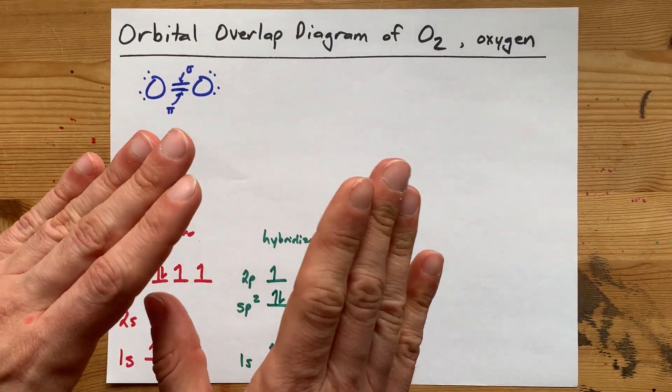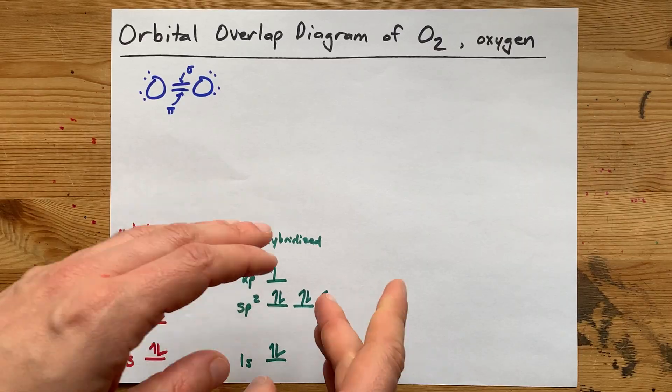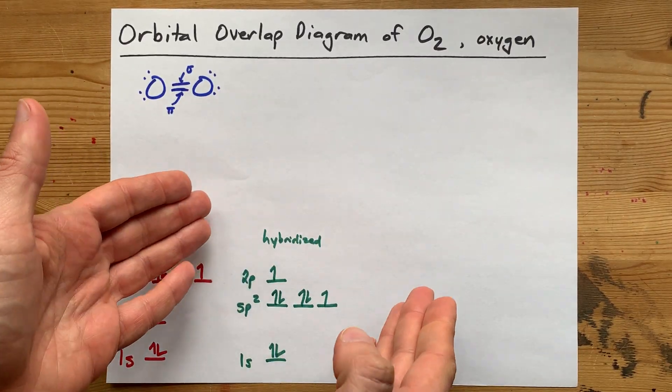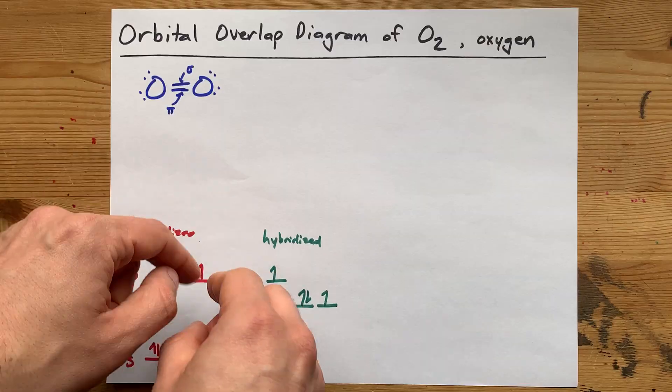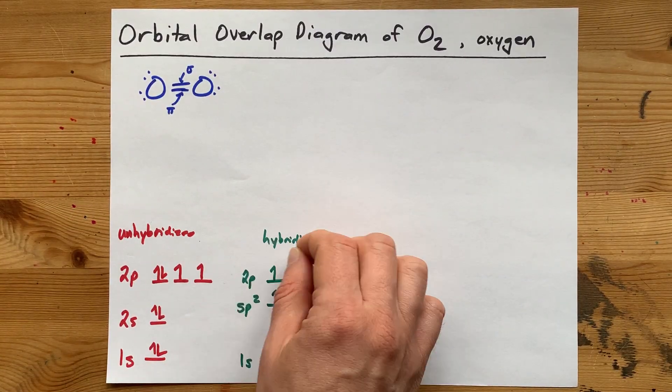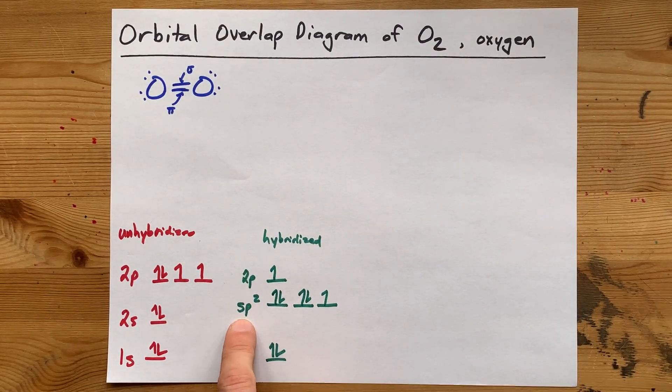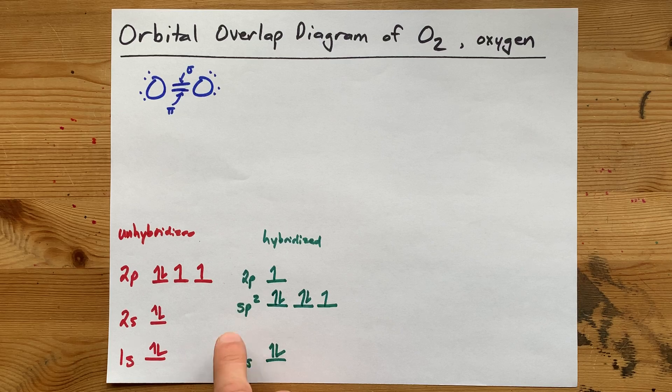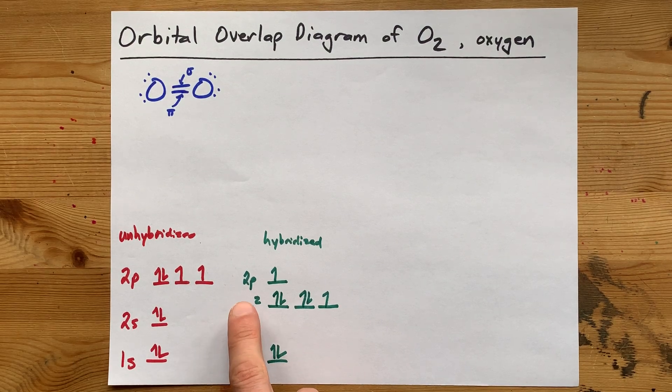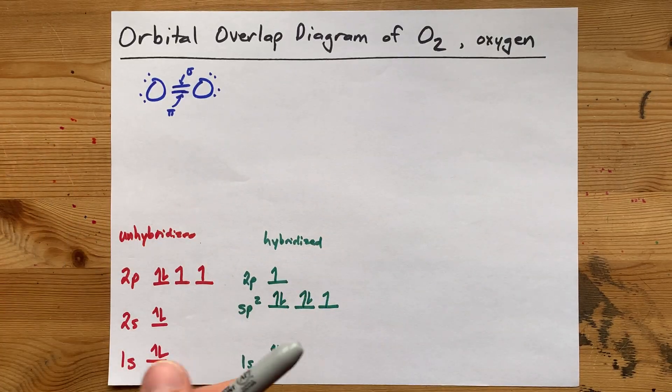So I know the Aufbau principle says go from the bottom up, and this is technically a violation of it, but we have to overlook that in order to explain how the hybridized orbitals work. Now you came for the orbital overlap diagram. I needed to know what the hybridization was before I could draw them.